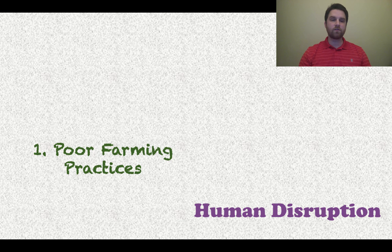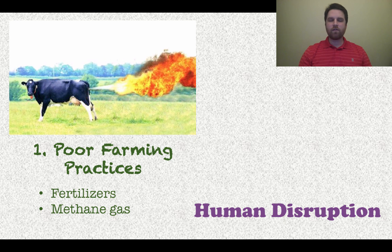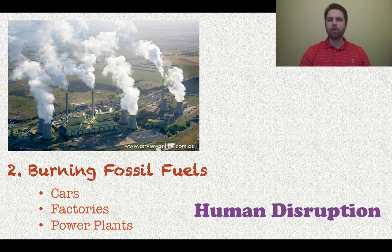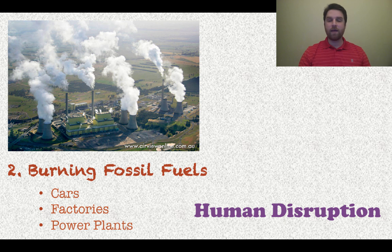Humans can also disrupt an ecosystem in a lot of ways. One way is poor farming practices — we use a lot of fertilizers that can disrupt the ecosystem, and cattle farming produces a tremendous amount of methane gas, which is very bad for the atmosphere. The other main way is that we burn fossil fuels. Cars, factories, and power plants use fossil fuels to generate power, which is not good for the atmosphere and the ecosystem.